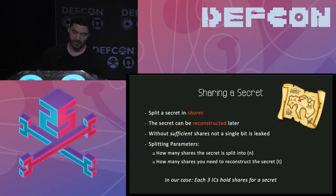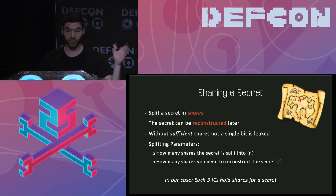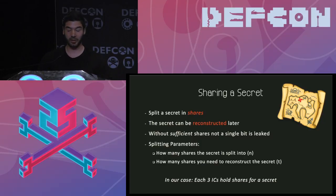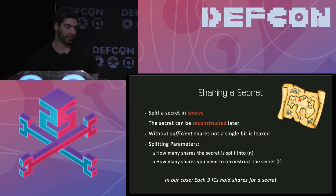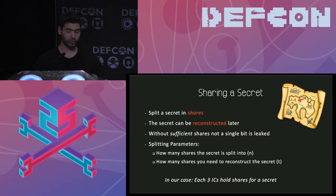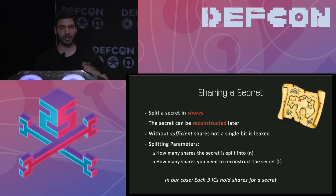Secret sharing is a very neat concept. Imagine three people who want to share a treasure map so they can retrieve the treasure only if all of them get together. The naive solution is to cut the treasure map into three pieces, but each piece leaks part of the information. Secret sharing schemes allow you to split the secret into shares and recombine them to retrieve the original secret, with the neat property that each share doesn't leak any information about the actual secret. As long as not all shares are present, you learn nothing about the secret they are hiding.